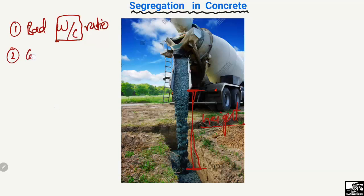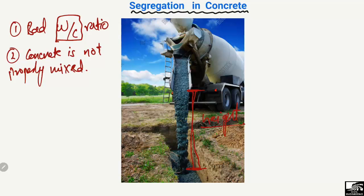The second reason segregation occurs is that concrete is not properly mixed. We need sufficient mixing time to achieve a good concrete mix. If the concrete is not properly mixed, there are more chances of segregation because the particles are not joined to one another properly, causing them to move away from each other during pouring. The third cause is pouring concrete from more than 1.5 meters or 5 feet of height.